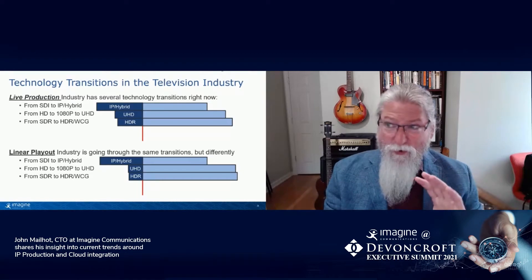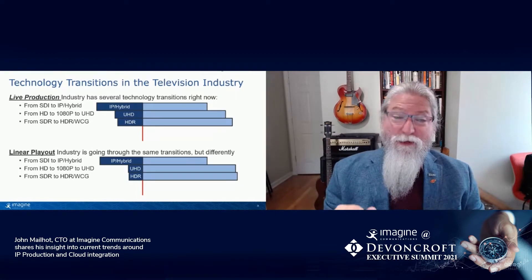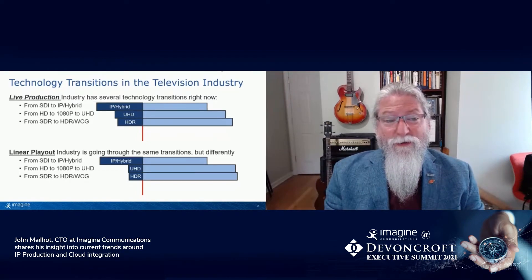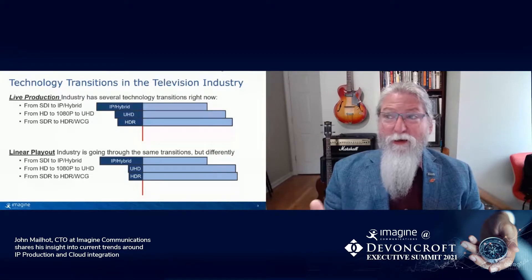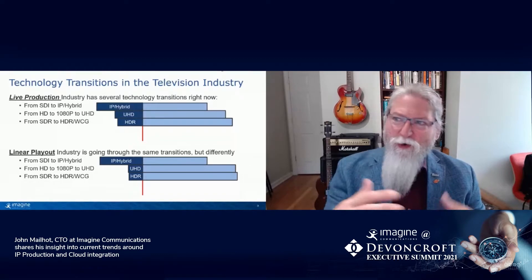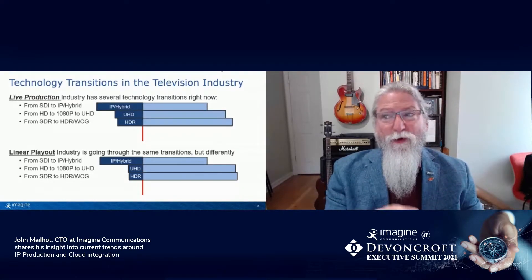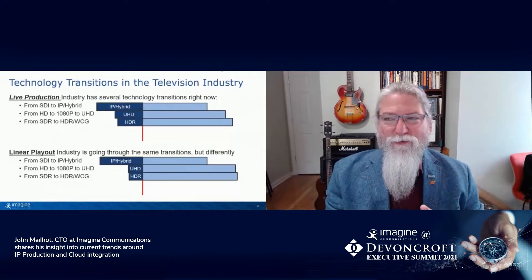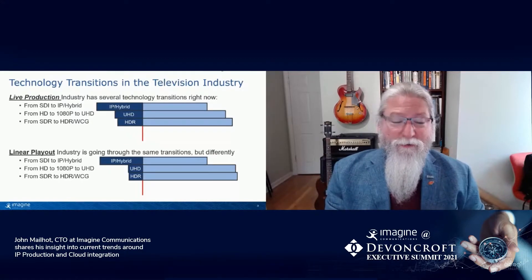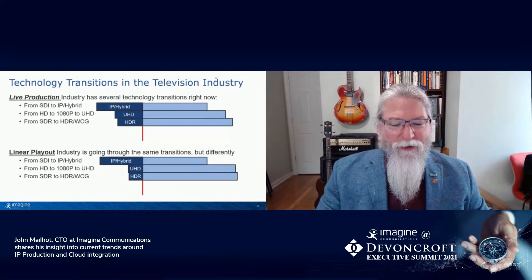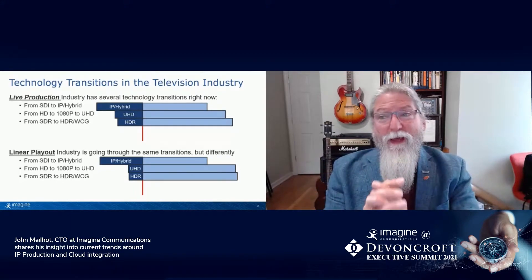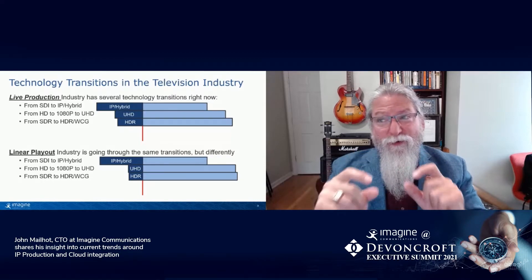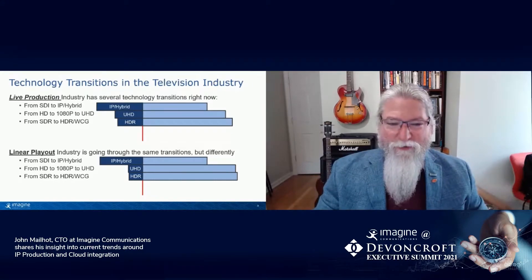HDR sort of goes hand in hand with UHD, though you can do HDR on 1080p as well, and it can make beautiful looking television. The transition from SDR to HDR in the live production world has, I think, been slowed down a little bit by COVID — we haven't done as much experimentation with HDR shooting and production, because it really does involve seeing what you're doing in a way that for HD we sort of know what it's going to look like. In linear playout, HDR and UHD go hand in hand; you wouldn't build a UHD playout system that didn't also support HDR, even if you're not doing it on the first day.